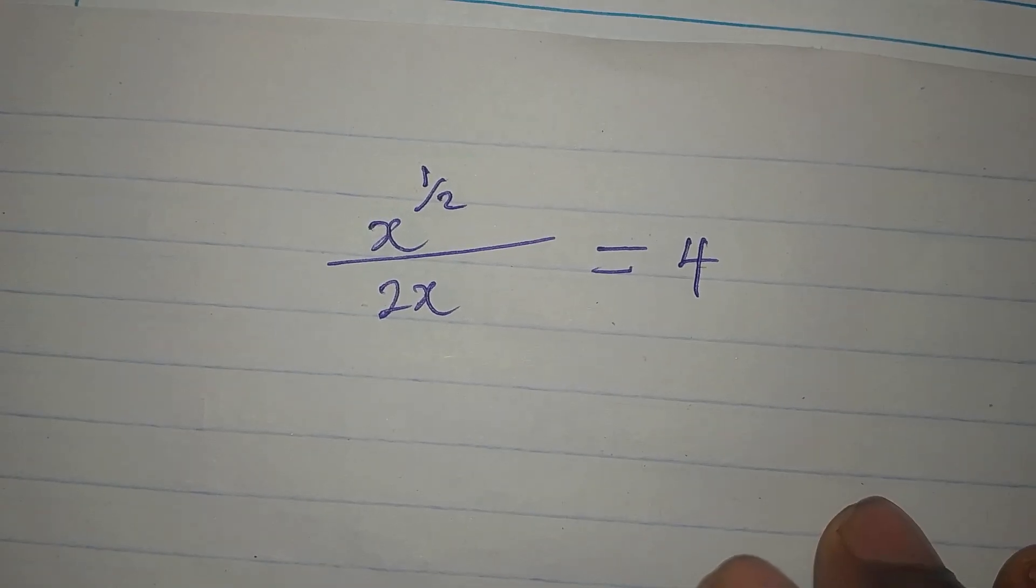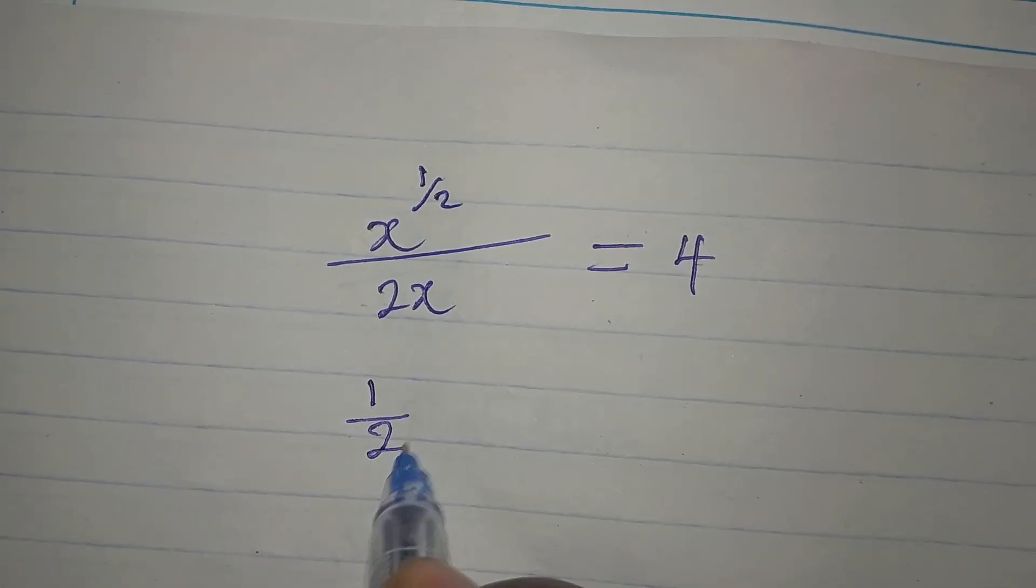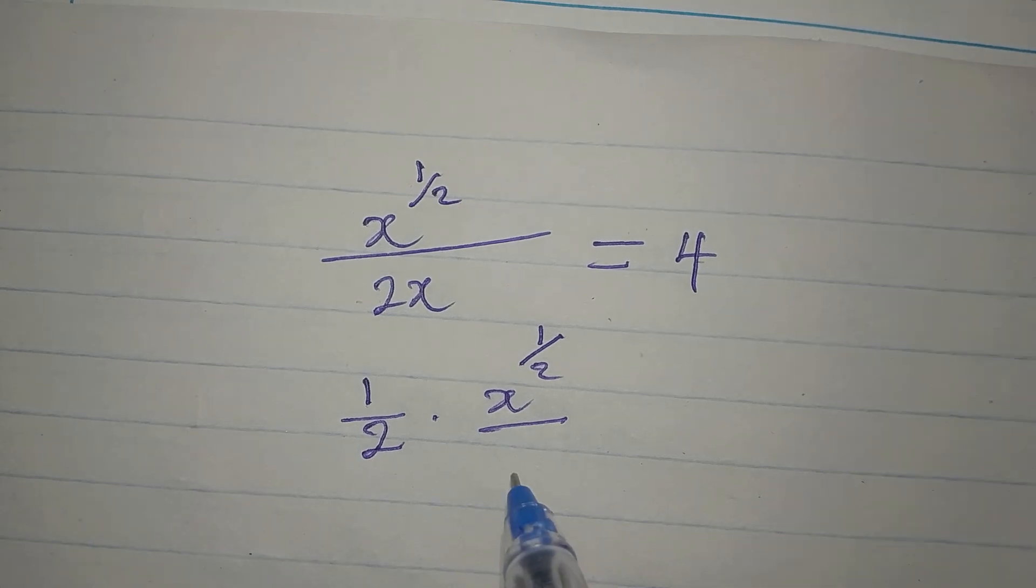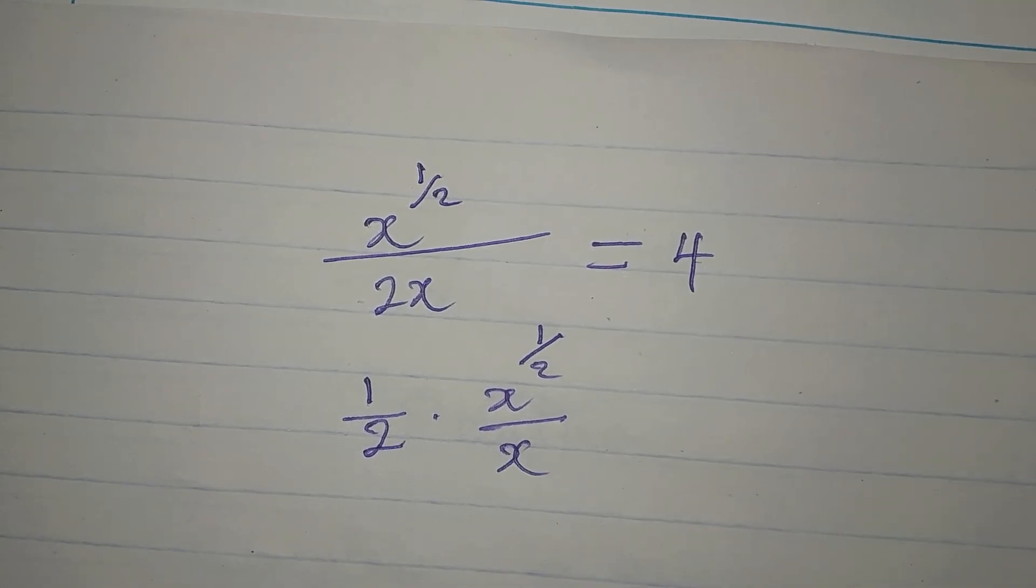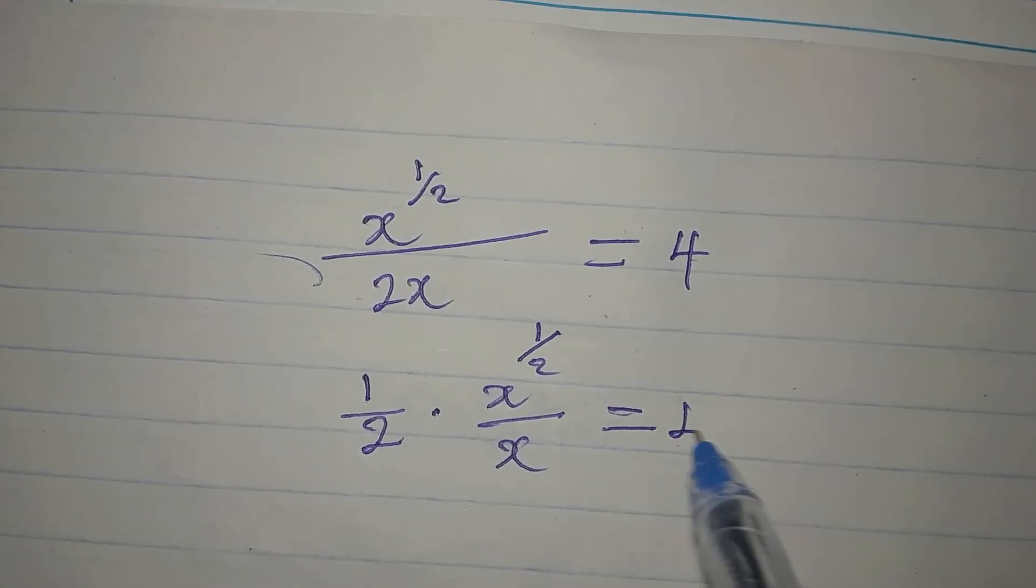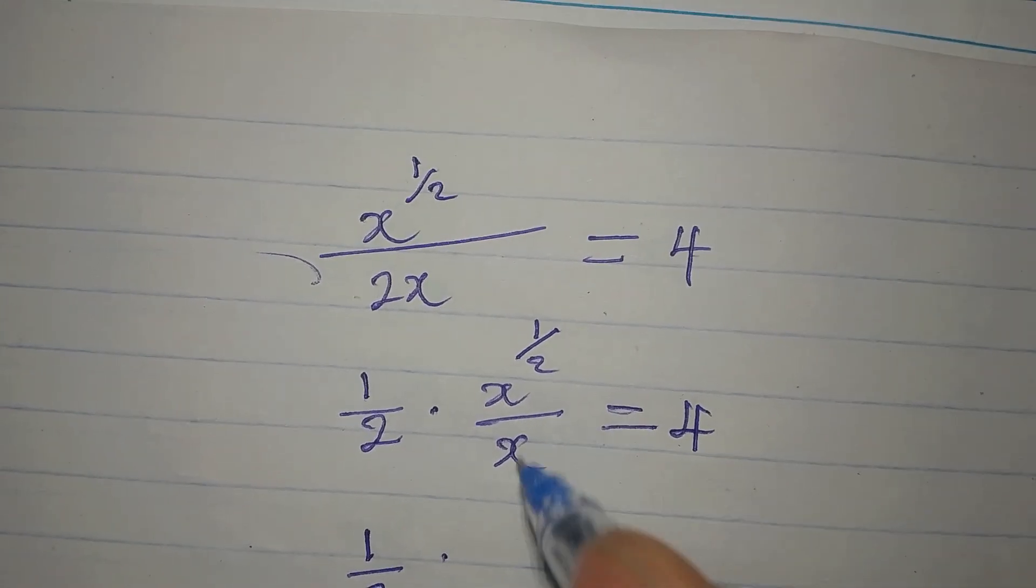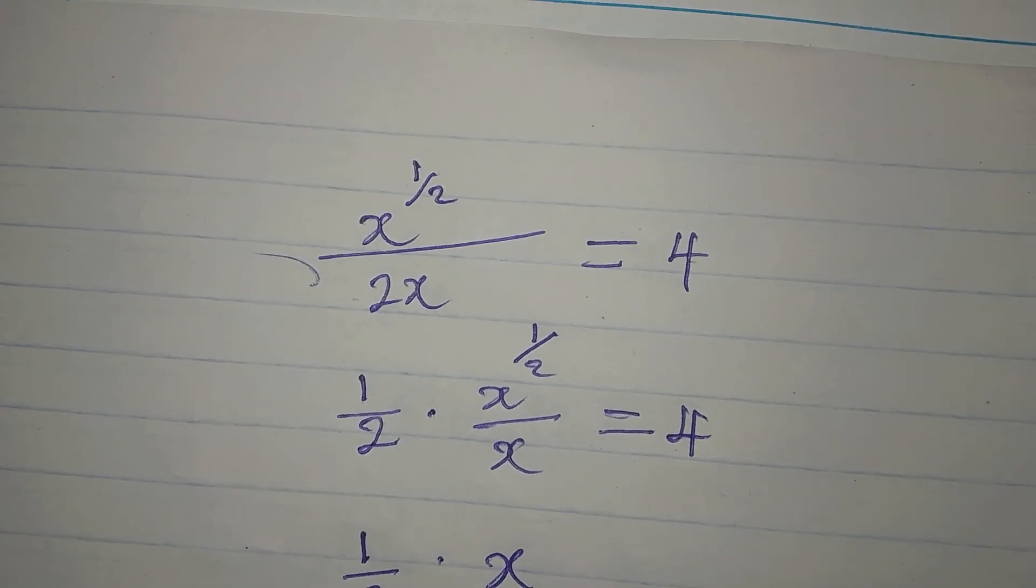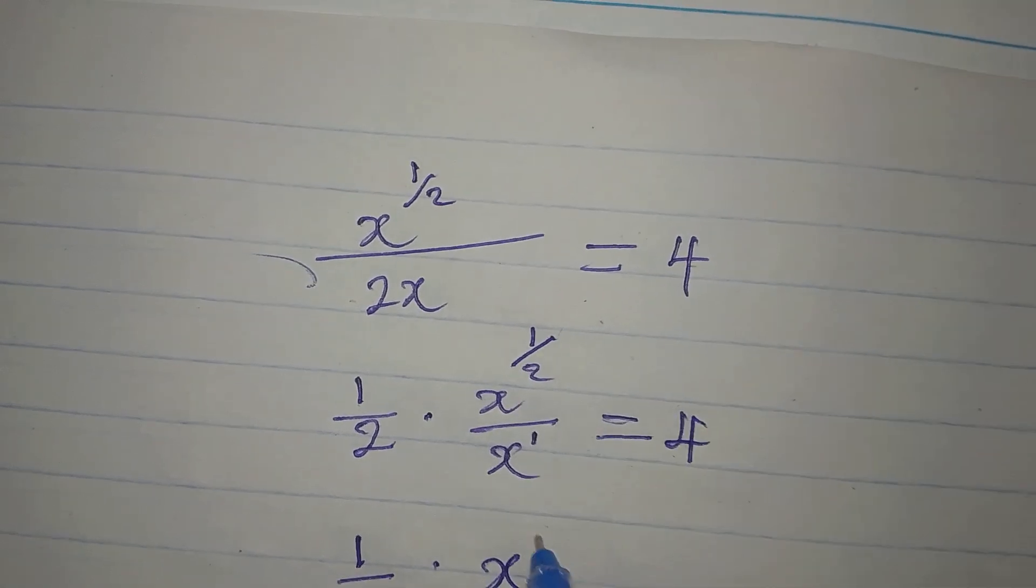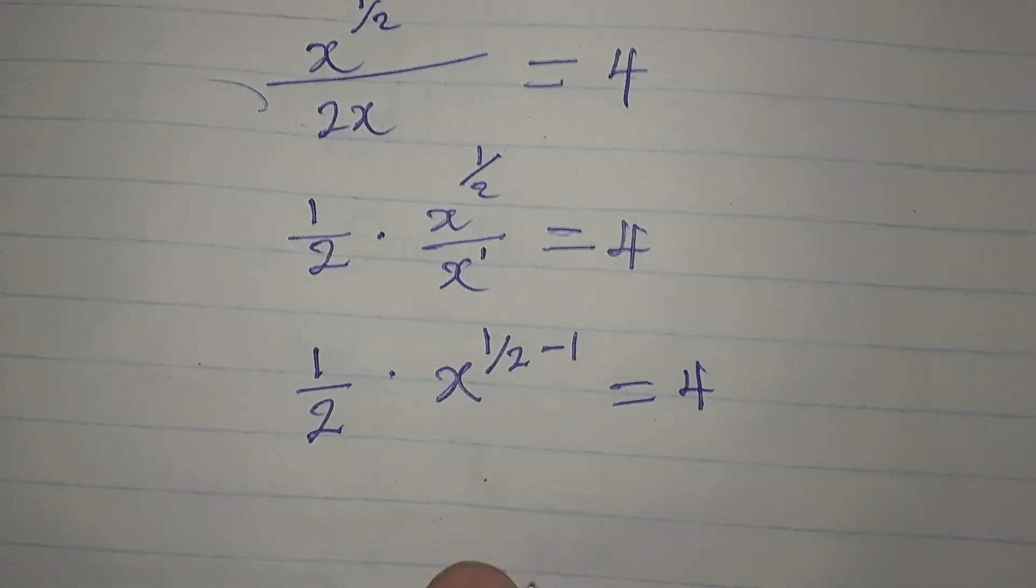Let's rearrange this. This can be 1 over 2 times x to the power of 1 over 2, divided by x, and the whole of this is equal to 4. We have 1 over 2 here, and we have the same base, so pick one of that. The power here is 1, so we have 1 over 2 minus 1, and everything here is equal to 4.